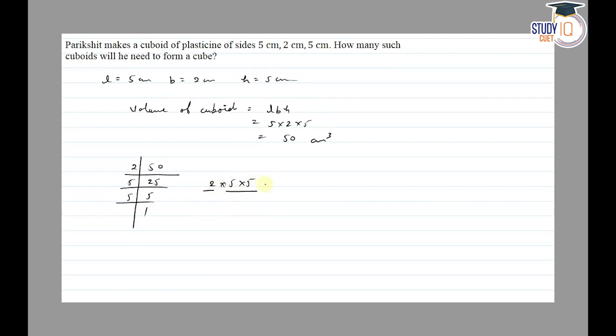So the answer is 20 such type of cuboids. We find out how many such cuboids will he need to form a cube, and the answer is 20.